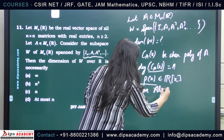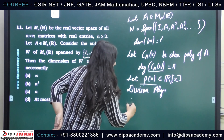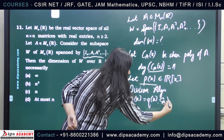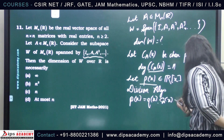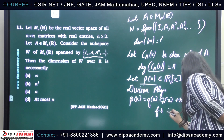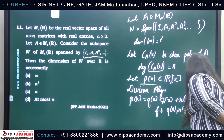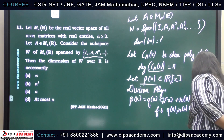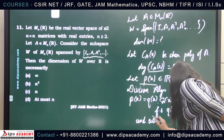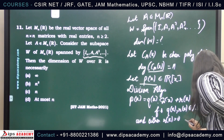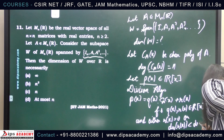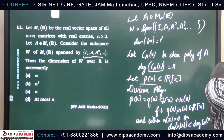The division algorithm states that P(x) = Q(x)·C(x) + R(x), for some Q(x) and R(x) belonging to the space of real polynomials, with the additional condition that either R(x) is the zero polynomial, or the degree of R(x) is strictly less than the degree of C(x).